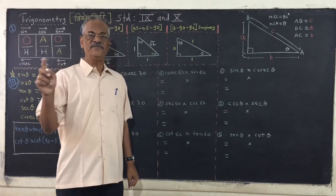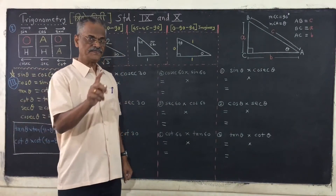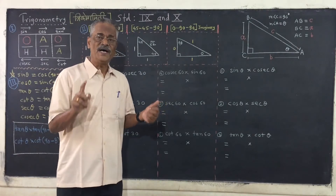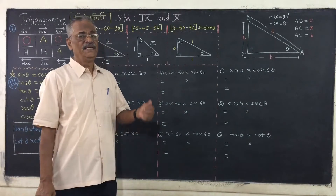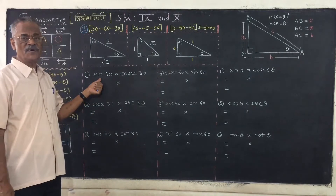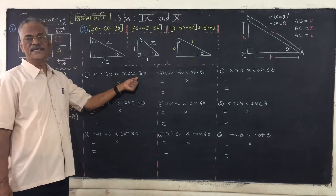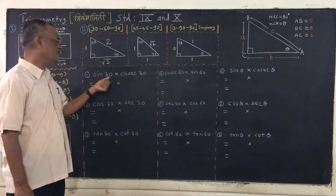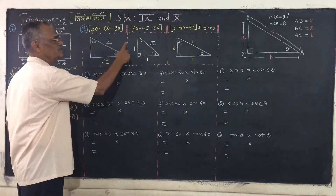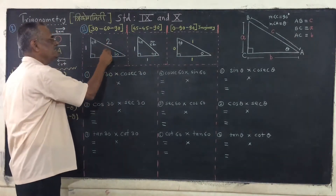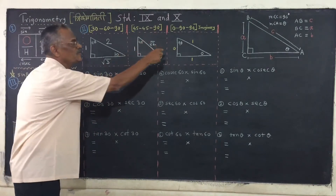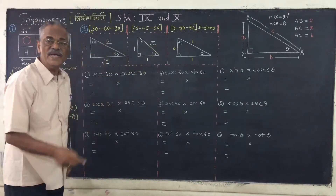In this video, let us calculate the product of sine 30 into cosec 30. If you remember the 30-60-90 imaginary triangle, that is the reference we will use.